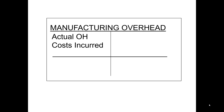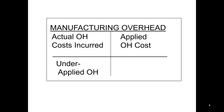You will record actual overhead costs on the debit side — so factory utilities paid, debit overhead. You will assign applied overhead costs on the credit side of this account. If you have a balance at the end on the debit side, it's under-applied; a credit balance at the end of the period means it's over-applied. Next up we'll work an example, so tune back in soon.